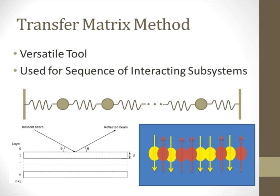The transfer matrix method is a general technique for solving problems in physics and mathematics. This is typically used when a system may be broken up into a sequence of interacting subsystems, such as a mass spring chain, a beam of light reflecting off a layered material, or the interaction of spin states.